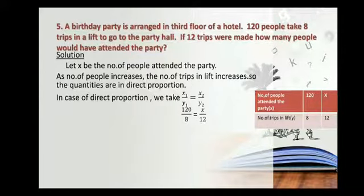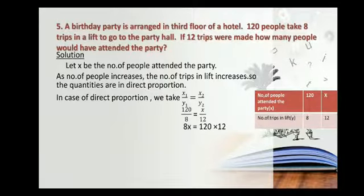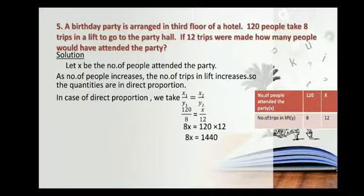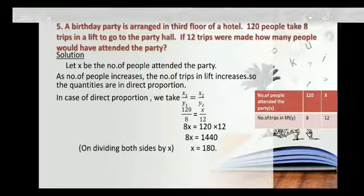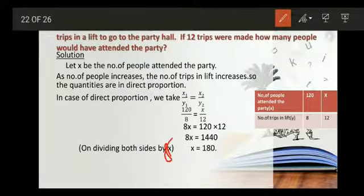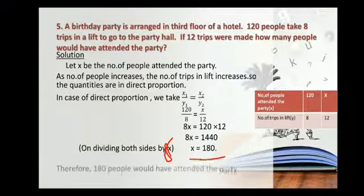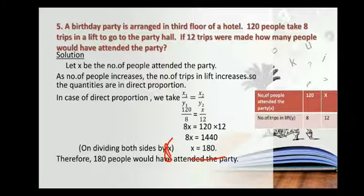Do cross multiplication: 8X is equal to 120 into 12, giving 8X is equal to 1440. X is equal to 1440 by 8 which is 180. On dividing both sides by 8, you get 180. So totally 180 people would have attended the party.